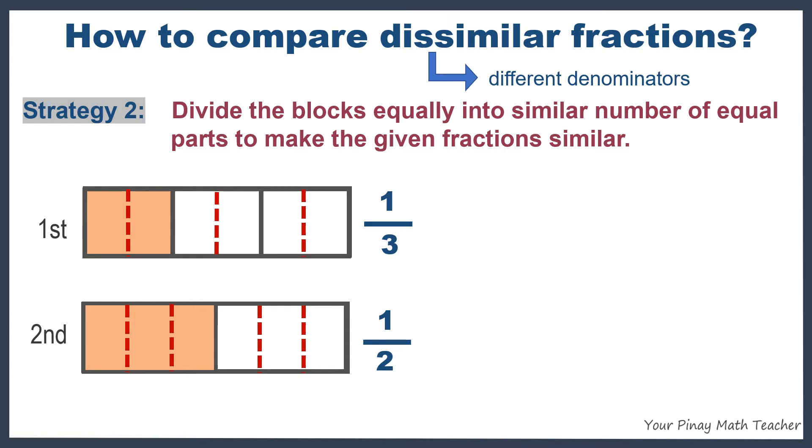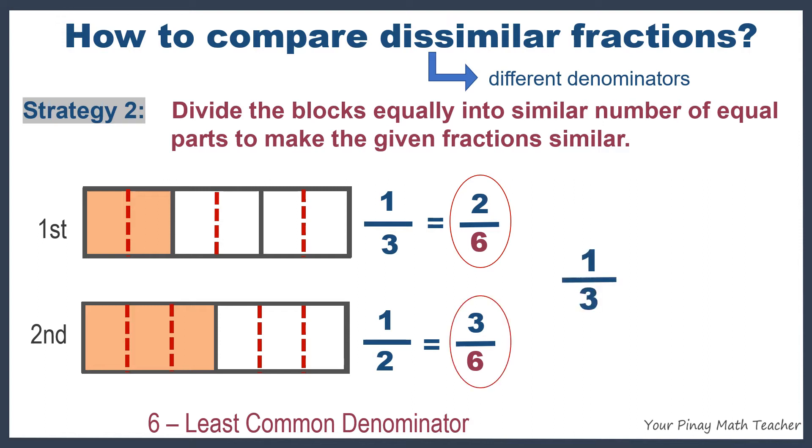Each of the figure has six equal parts. And since it has the same number of equal parts, which is six, six is called the least common denominator. And one-third can be renamed as two over six. Two over six is equivalent to one-third. And one-half can be renamed as three-sixths, which is equivalent to one-half. Since two-sixths is less than three-sixths, then one-third is less than one-half.